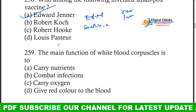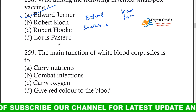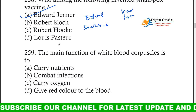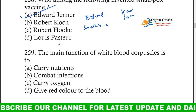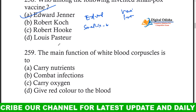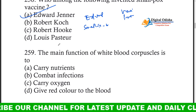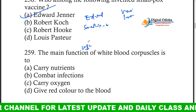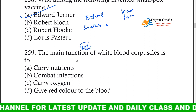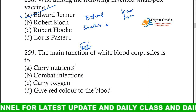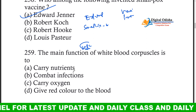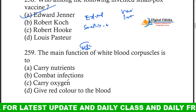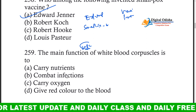The main function of white blood corpuscles is to combat infection. Other options were: carry nutrients, carry oxygen, give red color to the blood.